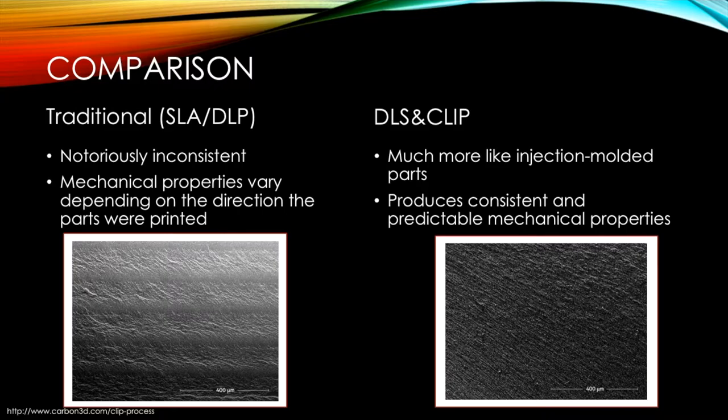Because DLS utilizes continuous production, the resulting parts have better and more uniform structures, therefore producing more consistent and predictable mechanical properties.